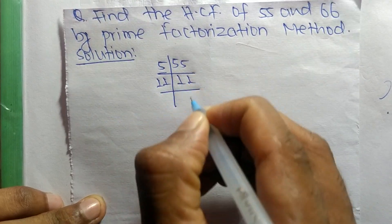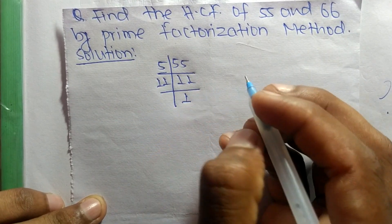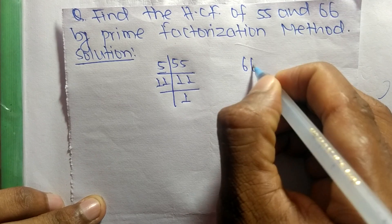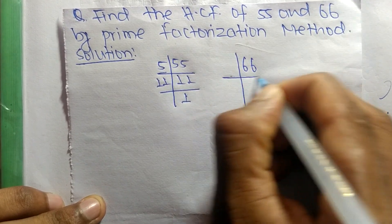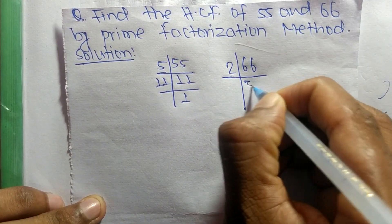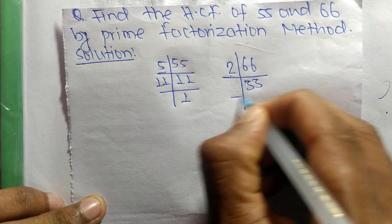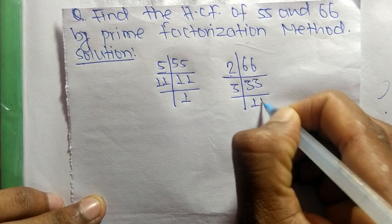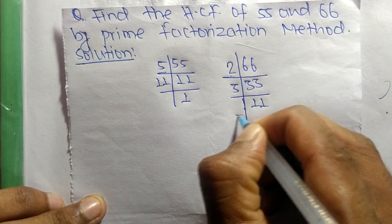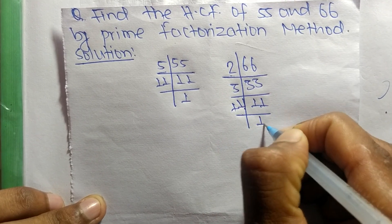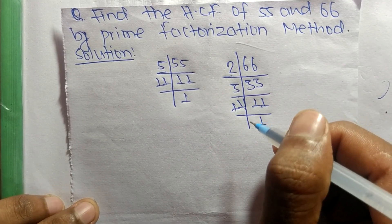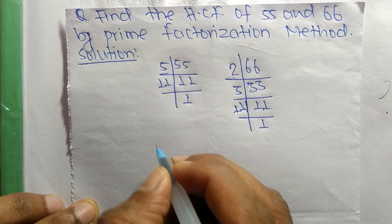The prime factors of 66 are: it is 2 times 33 equals 66, then 3 times 11 equals 33, and 11 times 1 equals 11. So now from these prime factors we can write: